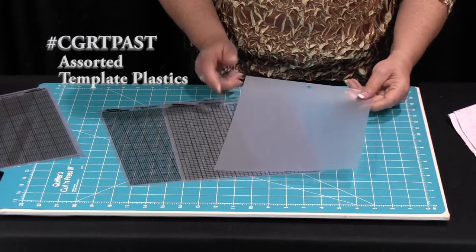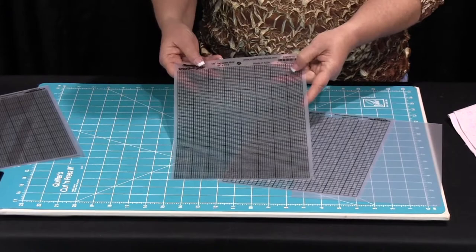The Creative Grids template plastic comes in an assorted pack that includes two clear, two quarter inch grid, and two eighth inch grid sheets.